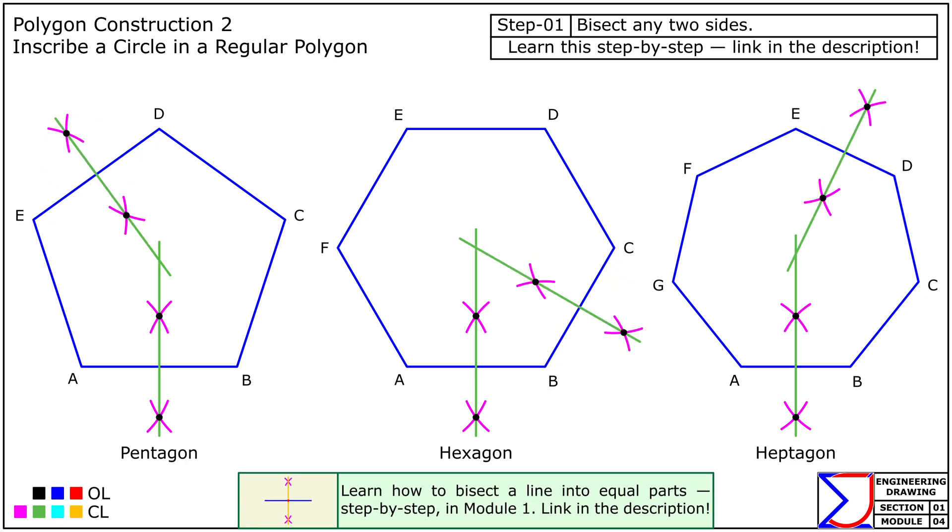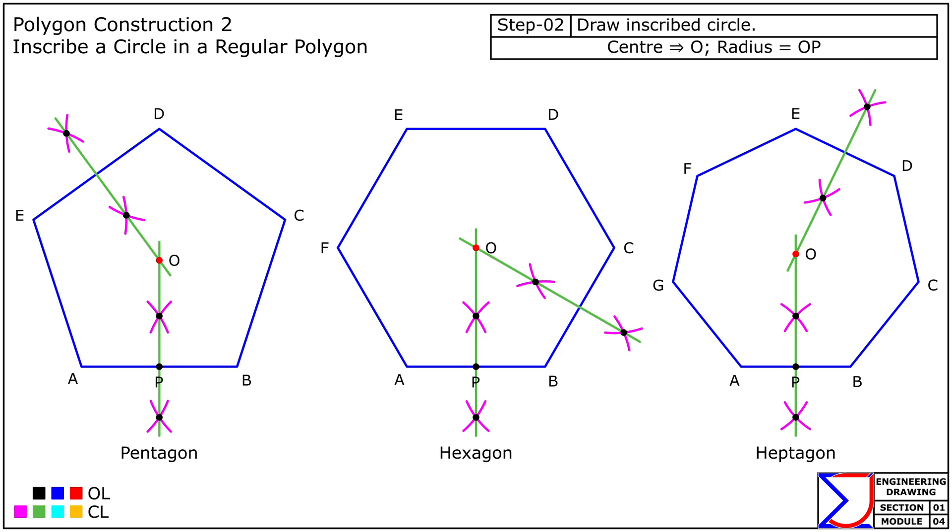These perpendicular bisectors intersect at point O, which becomes the center of the inscribed circle. Then mark point P where one of the side bisectors intersects its corresponding side at a right angle. Finally, with O as the center and OP as the radius, draw the required circle. This circle will be inscribed within the polygon, touching each side exactly once.